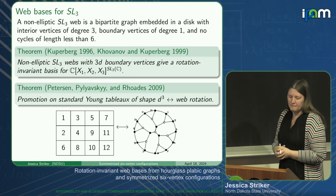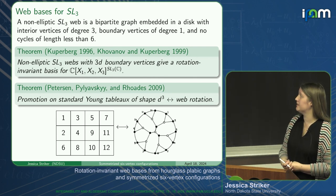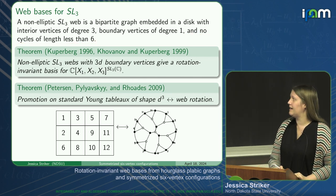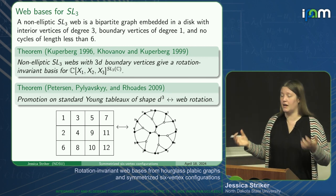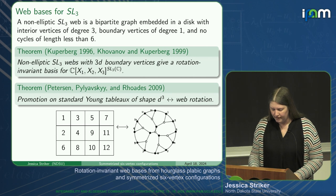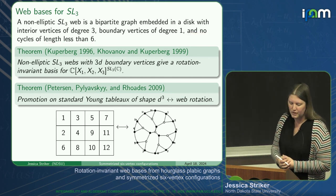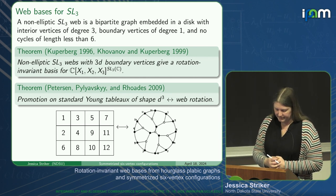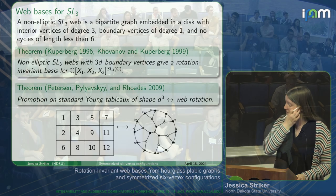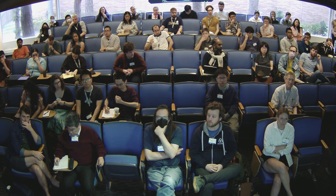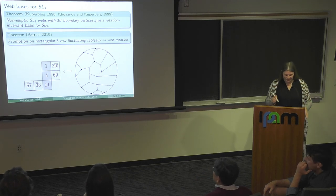For three-row tableau and SL3 invariant polynomials, we have a web basis—the non-elliptic SL3 web basis of Kuperberg, also studied with Khovanov and Kuperberg. SL3 webs are bipartite graphs embedded in a disk with interior vertices of degree three, boundary vertices of degree one, and no cycles of length less than six. The non-elliptic condition corresponds to this no-cycles-of-length-less-than-six requirement. And it's also true that for fluctuating tableau—which Petersen called generalized oscillating tableau—promotion on these corresponds to rotation on more general non-elliptic SL3 webs.